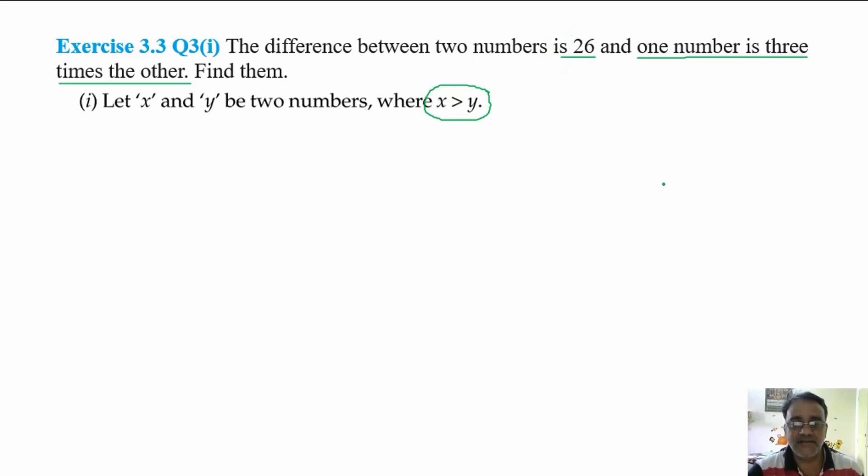The difference is 26, so x minus y equals 26. Let it be equation number one. And the second one is the greater number is three times the smaller number, so x equals 3y.